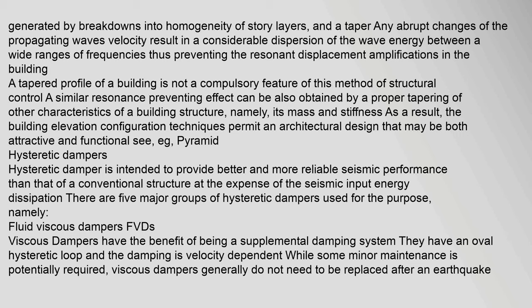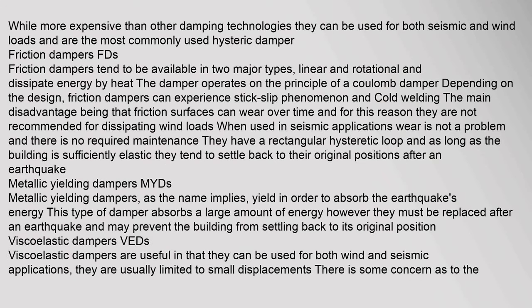A hysteretic damper is intended to provide better and more reliable seismic performance than a conventional structure through seismic input energy dissipation. There are five major groups of hysteretic dampers. Fluid viscous dampers (FVDs) have an oval hysteretic loop and velocity-dependent damping. They generally do not need to be replaced after an earthquake, can be used for both seismic and wind loads, and are the most commonly used hysteretic damper.